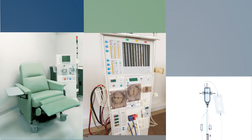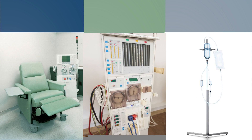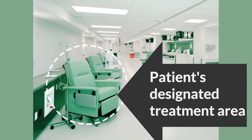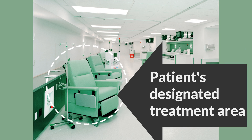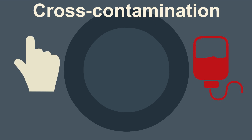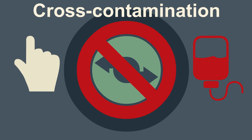Each dialysis patient station usually contains a reclining infusion chair, a dialysis machine, and an IV pole. There may be other treatment equipment and supplies, too. The space for each dialysis station must be considered the patient's designated treatment area. Prevention of cross-contamination of surfaces, medical equipment, and provider's hands is crucial when working in this high-risk healthcare environment.